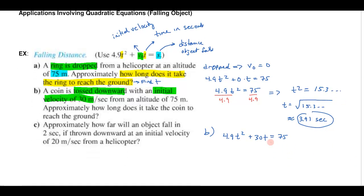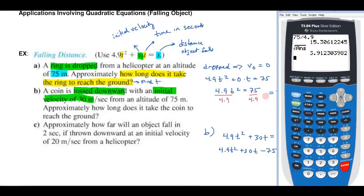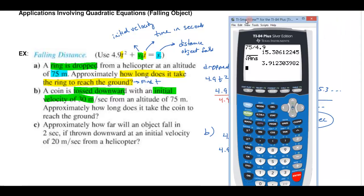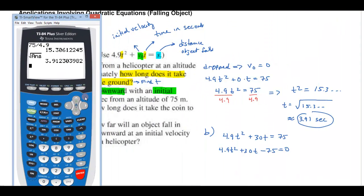So in this case I would definitely want to bring the 75 over. 4.9t² plus 30t minus 75 equals 0 and you could do this by hand plugging into the quadratic formula or we can use our graphing calculator we have this programmed in let me move this over where I can see a little better.